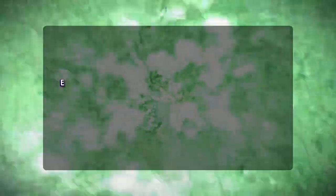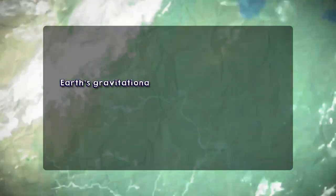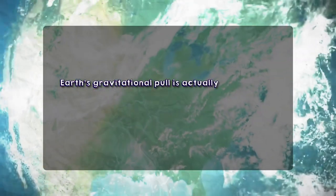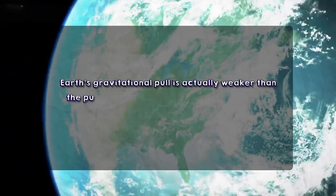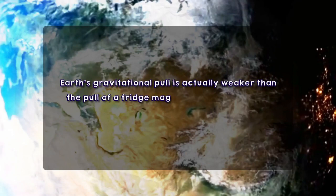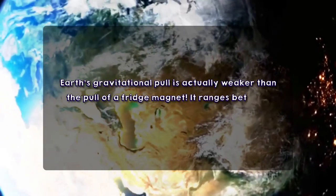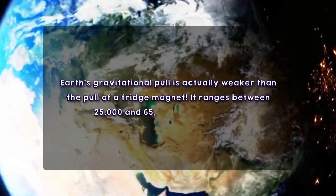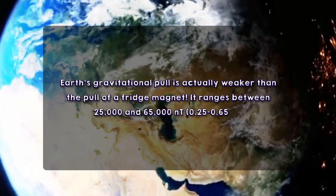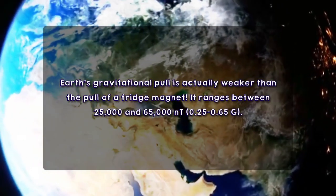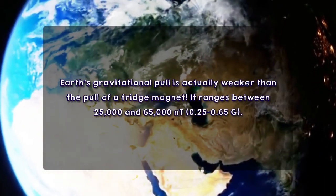Did you know? Earth's gravitational pull is actually weaker than the pull of a fridge magnet — it ranges between 25,000 and 65,000 nanotesla.